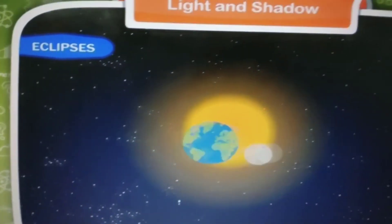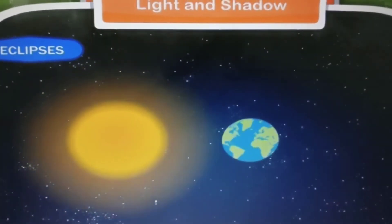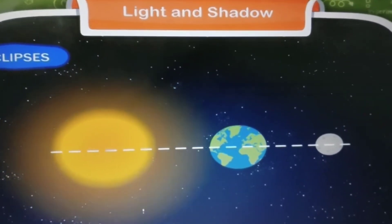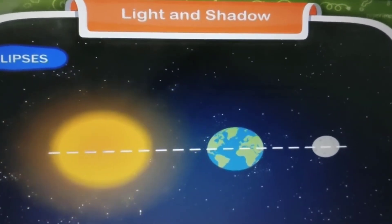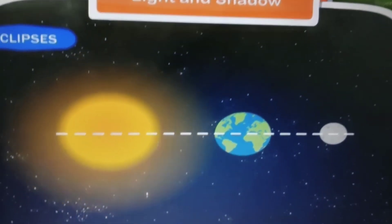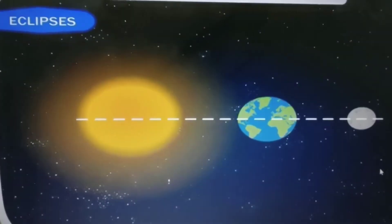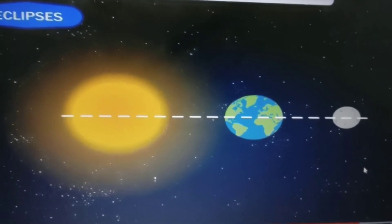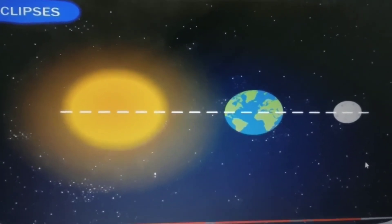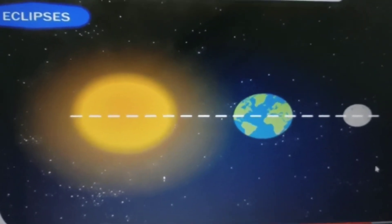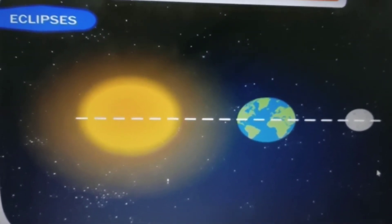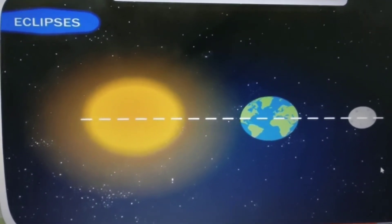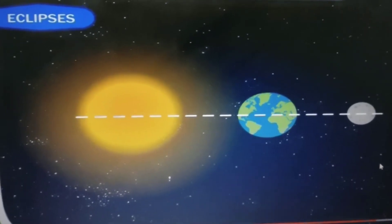The next topic is eclipses. As you all know, the sun is the source of light and the earth and moon are not sources of light. How do eclipses occur? When sunlight falls on the earth and moon, they cast shadows. Yes, we can see these shadows. The eclipses of the sun and moon occur because of the shadow cast by the moon and earth respectively. When the sun or moon has an eclipse, its bright surface turns dark.